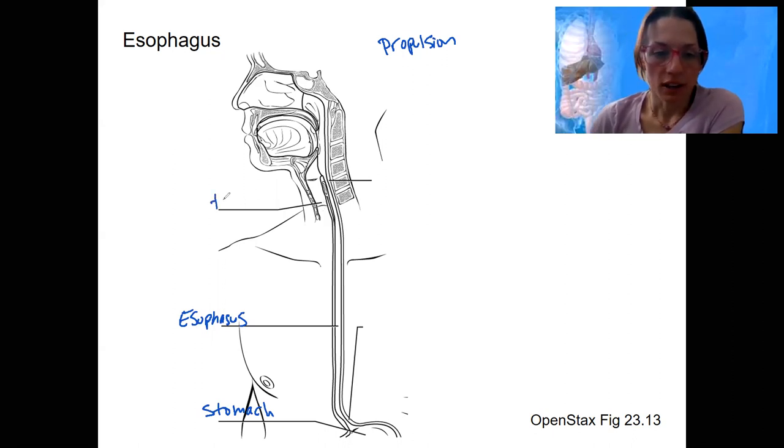This here is the trachea and there's two other important components in this picture. We've got two sphincters. One is a name that makes sense. Upper esophageal sphincter.